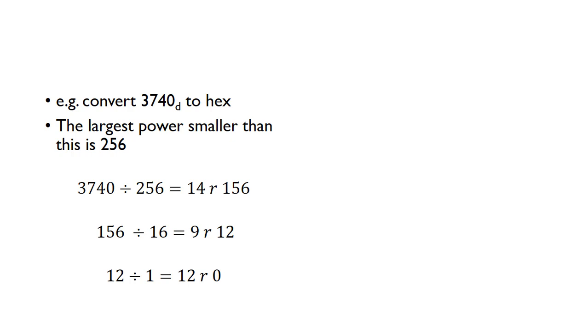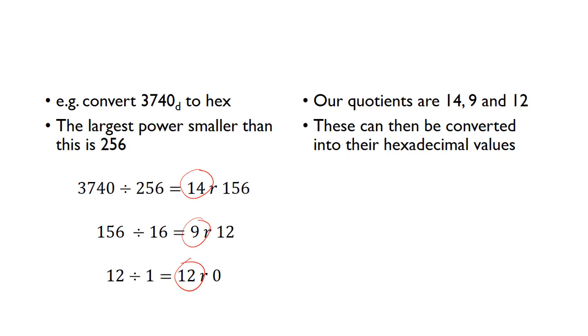So you just keep repeating those steps until you've got 0 remainder, and that's when all the counters are counted for. So then, the actual values then are just given by these quotients. So here we've got 14, 9, and 12, we'll just convert those into the hexadecimal values. So here, 3740 is just given by 0xE9C.